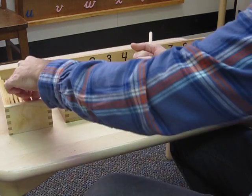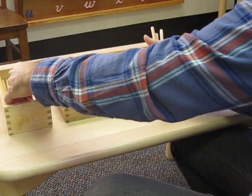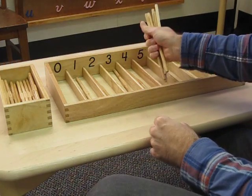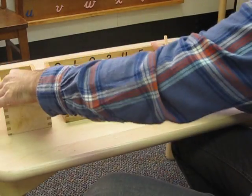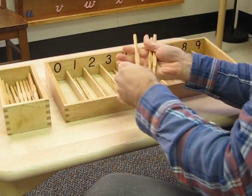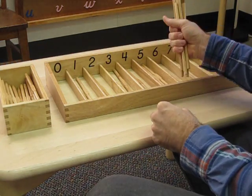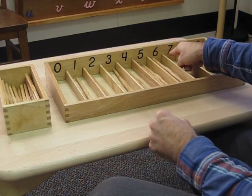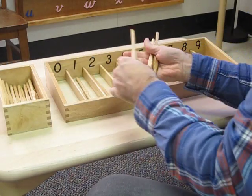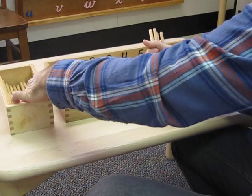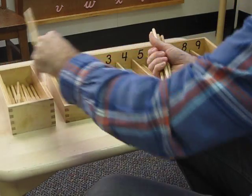Six: one, two, three, four, five, six. Seven: one, two, three, four, five, six, seven.